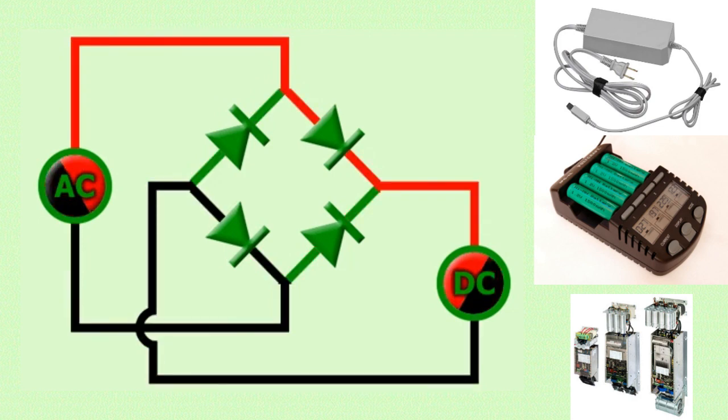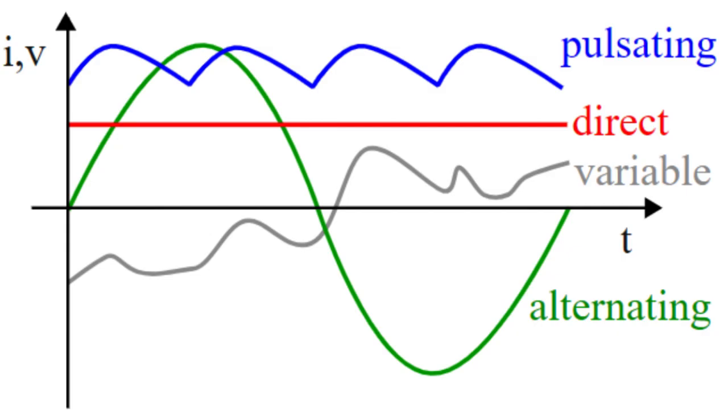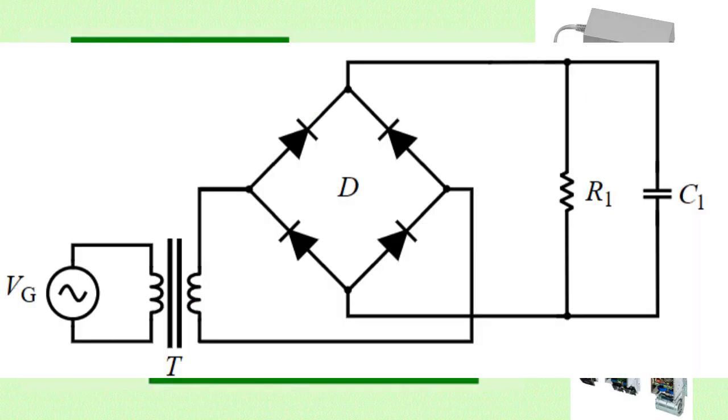The output of the diode bridge rectifier is not a pure DC voltage, but a pulsed DC voltage that has the same average value as the input AC voltage. This pulsed DC voltage can be smoothed out using a filter circuit such as a capacitor filter to obtain a pure DC voltage.